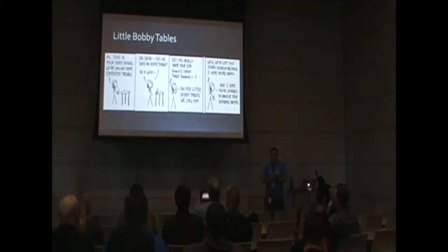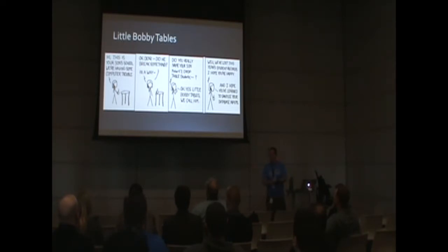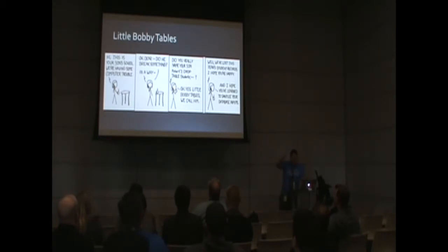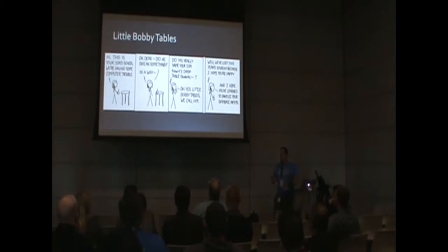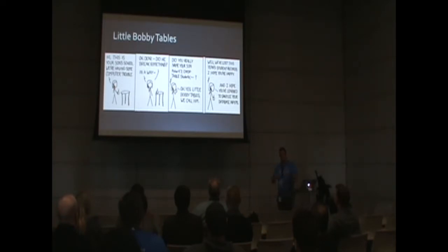There's an awesome XKCD slide that also explains this. Effectively, they named their kid — Robert's, apostrophe, drop table students. The school calls and says 'we have a problem with your kid.' They say 'you dropped all the tables in our database.' Little Bobby Tables is what we call them, because every school he goes to, all the tables get dropped because they didn't sanitize their inputs.